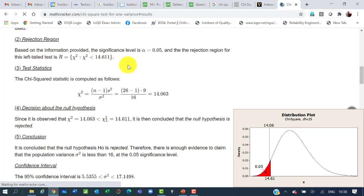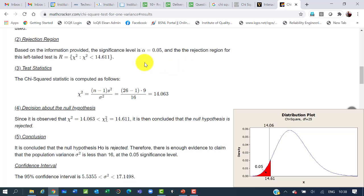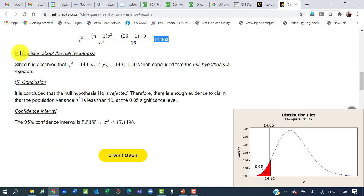And it says based on the information provided, the significance level is α = 0.05 and the rejection region for this left tail test is χ² < 14.611 which matches with our table value. The test statistic also matches with our value 14.063. Decision also matches. Since it is observed that the calculated chi square value 14.063 is less than the critical value 14.611, it is concluded that the null hypothesis is rejected.